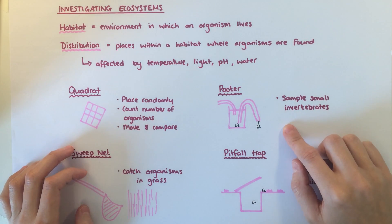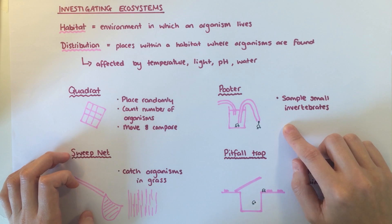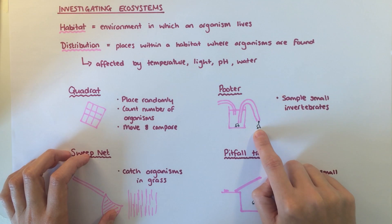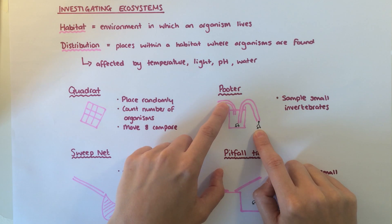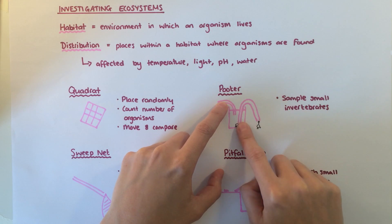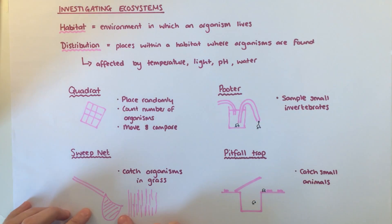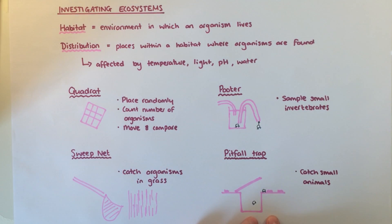A pooter is a small container used to sample small invertebrates by placing the collecting tube over the animal and sucking on the other tube to draw the animal up and into the container. Sweep nets are used to catch organisms in grass areas, and pitfall traps can be set into the ground so that small animals fall into them and can then be studied.